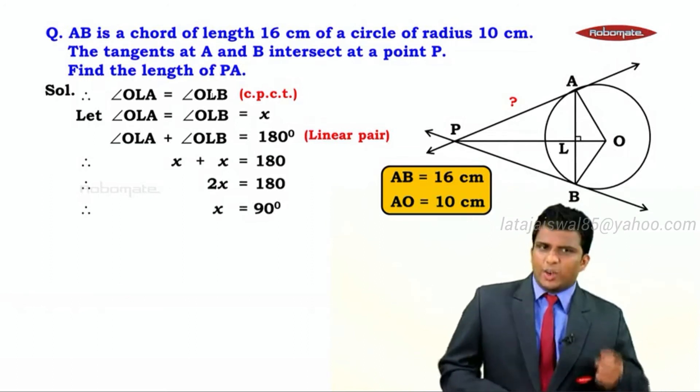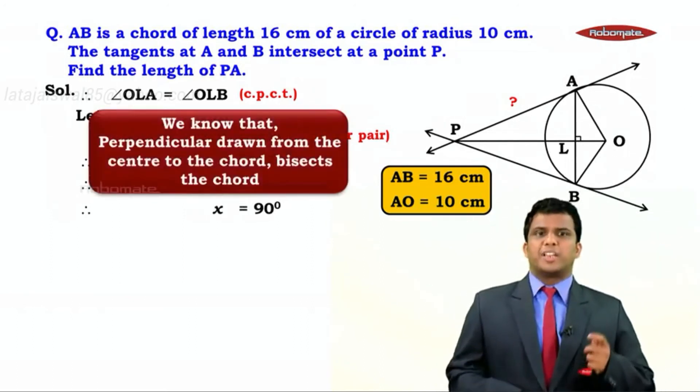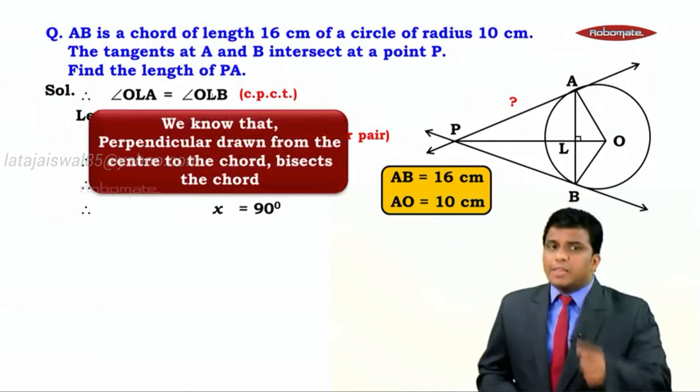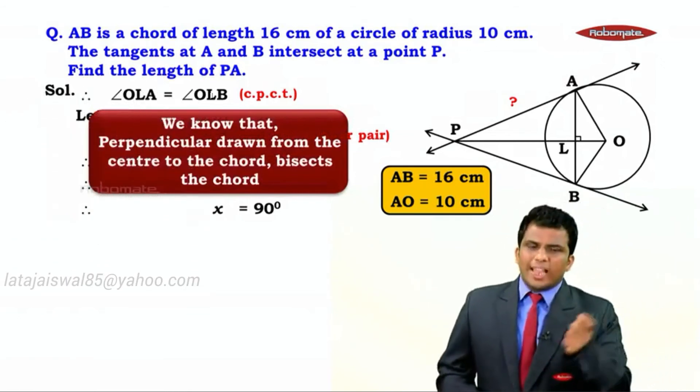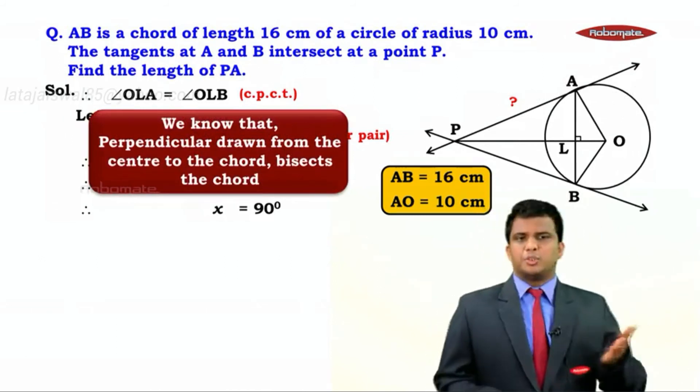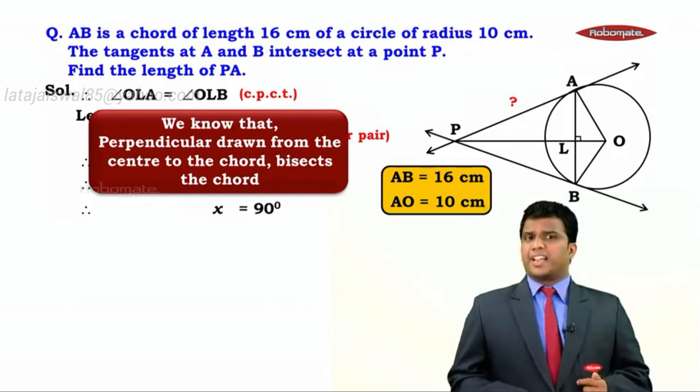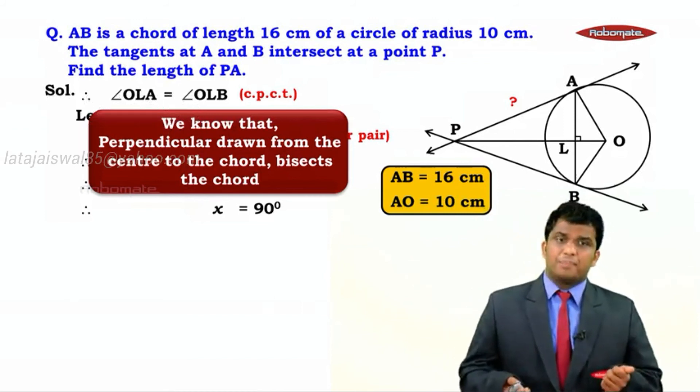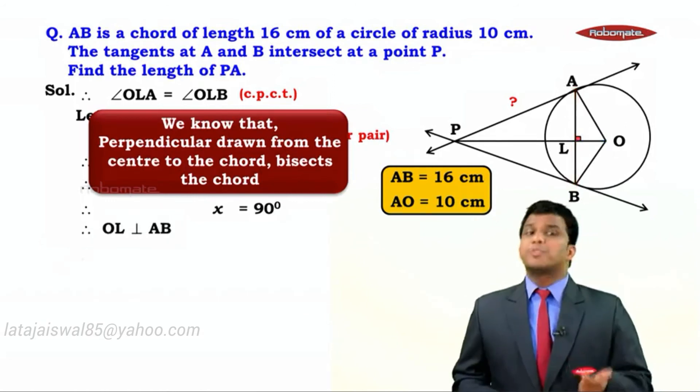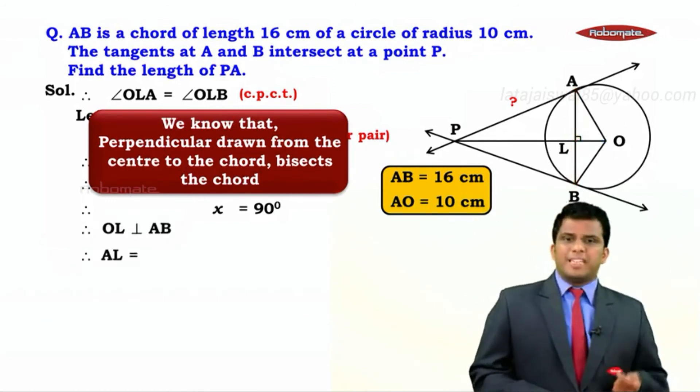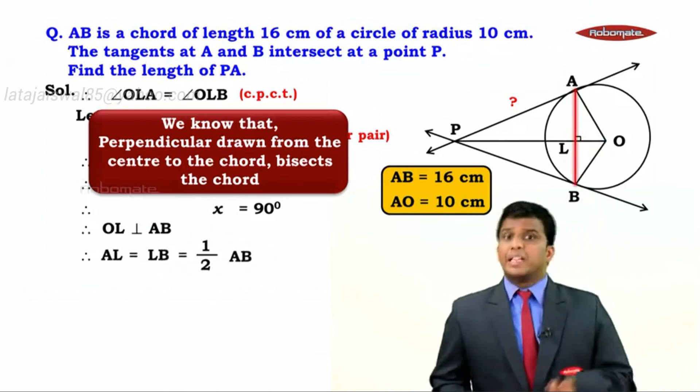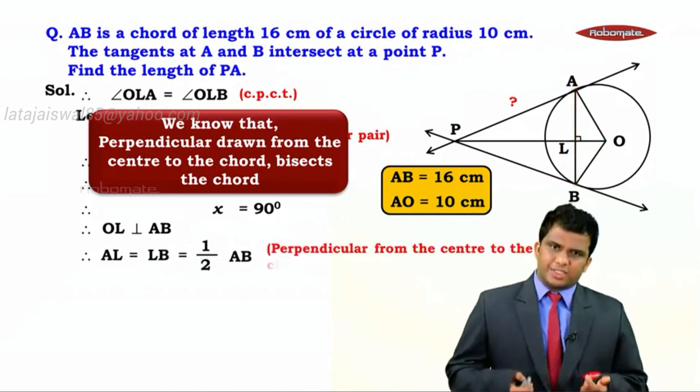That means angle OLA and angle OLB will be equal to 90 degrees. What it does is, AB is a chord and since angle OLA is 90, we have a perpendicular from the center of the circle to the chord. What will this perpendicular do? It will bisect the chord. That means AL will equal LB, which equals half of AB. The perpendicular bisects the chord.